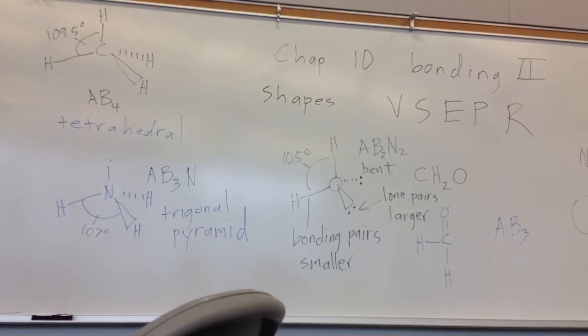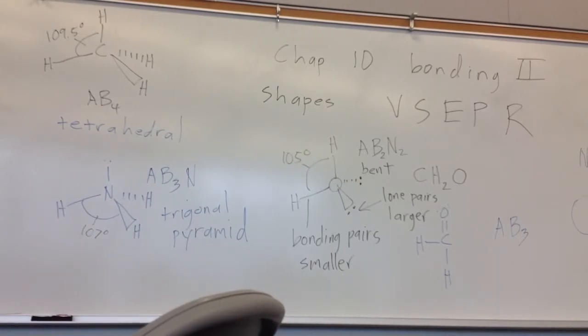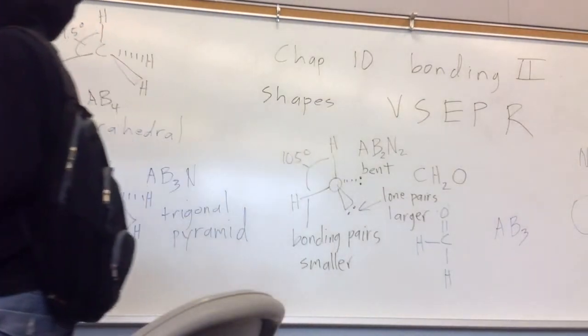In this model that you have here, you have her lone pairs to a specific side. Would it matter if it was the other way around? I think she has to be served at an important place. You're asking, like, if you draw out Lewis structure, it doesn't matter if you do that. That. No, no, no. I mean, like...